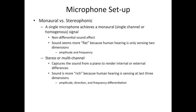Monaural vs. stereophonic. A single microphone achieves a monaural, single-channel, or homogenous signal with no differential sound effect. Sound seems more flat because human hearing is only sensing two dimensions: amplitude and frequency. In the case of stereo or multi-channel, it captures the sound from a piano to render internal or external differences. Sound is more rich because human hearing is sensing at least three dimensions: amplitude, direction, and frequency differentiation.